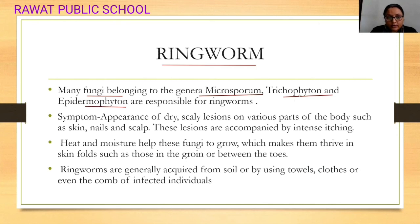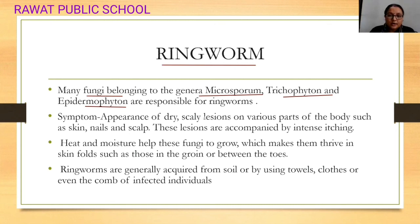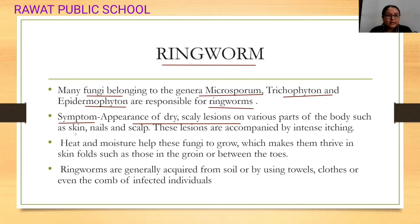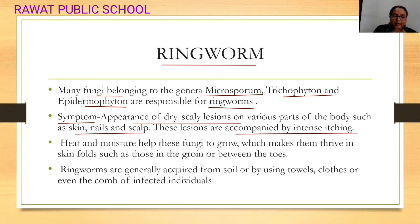Microsporum, Trichophyton, and Epidermophyton are the genera responsible for ringworm. The symptoms are dry, scaly lesions — a rough area on various parts of the body such as skin, nails, and the scalp. These lesions are accompanied by intense itching, redness, discoloration, patches, and a ring-like appearance.